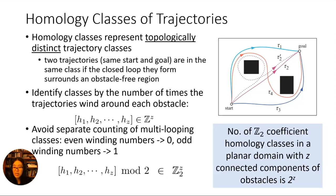We can identify a homology class by looking at how many times its trajectories wind around each obstacle. This gives us a vector of integers, one for each of the z obstacles. However, this actually gives us an infinite number of classes because a trajectory can loop around an obstacle any number of times.